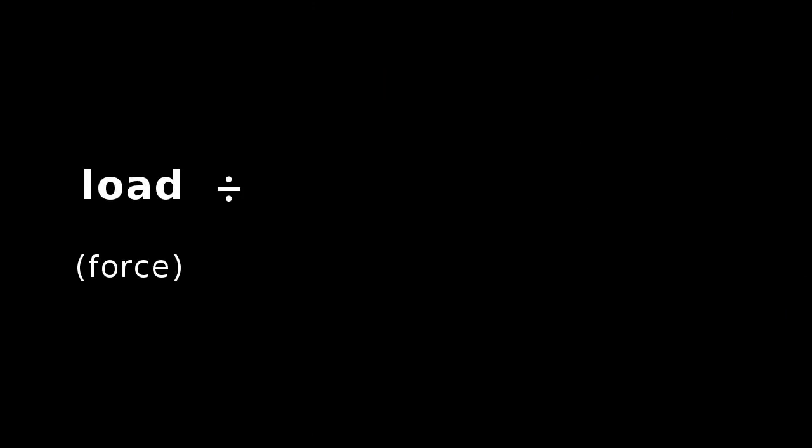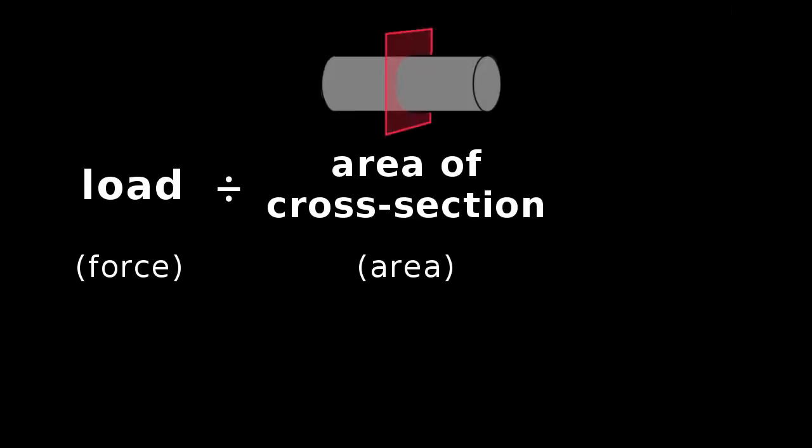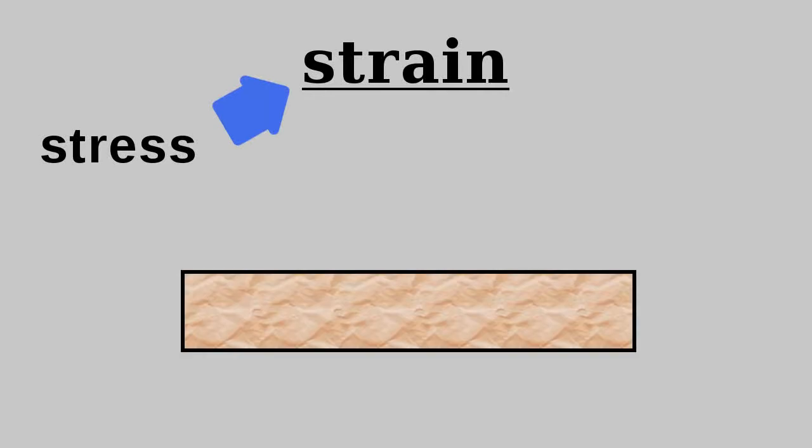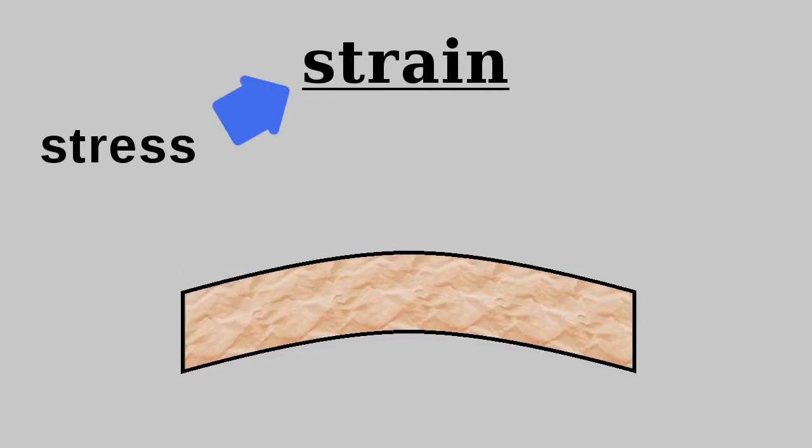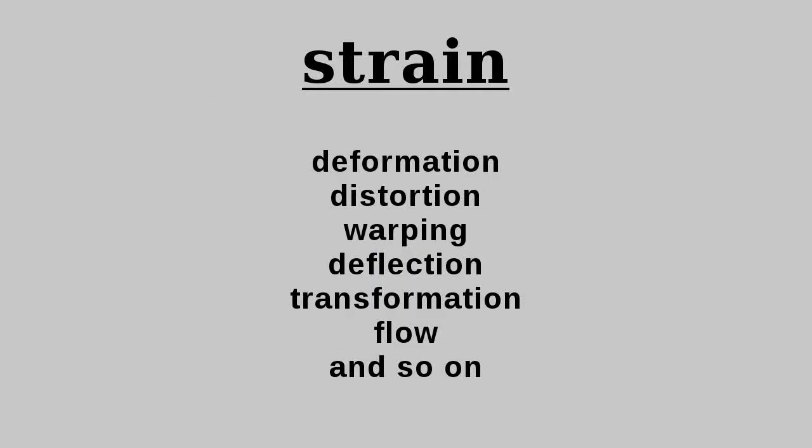Ideally, we can divide the load by the area of a cross-section of the object to get the stress. The presence of stress causes strain, which means any change from the starting shape or size of the object. Synonyms for strain include deformation, distortion, warping, and deflection.